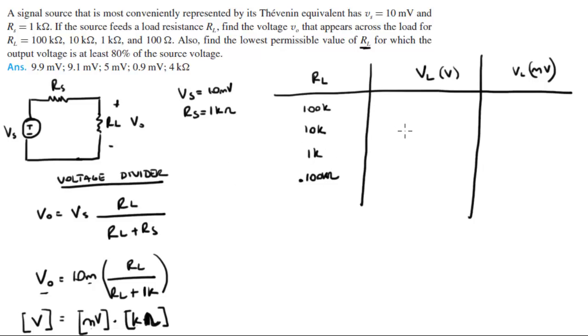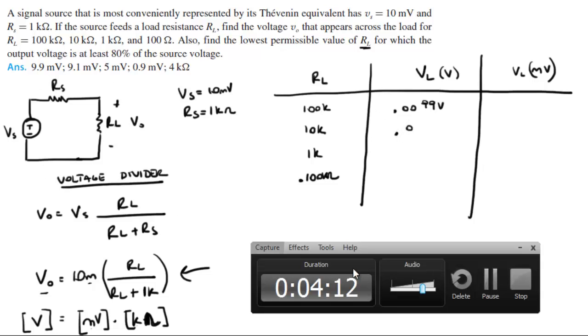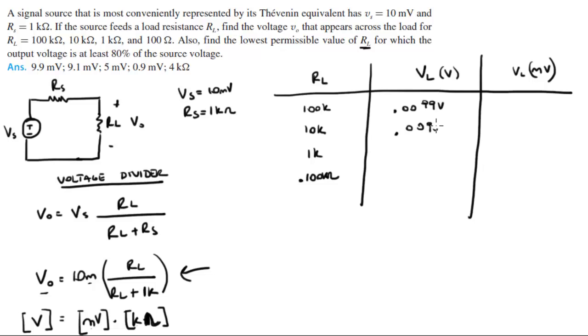So when you plug in these different values you're going to get the following values. For 100K when you plug it into this formula, we're plugging all these values into this formula, gives you 0.0099 volts. Plug it into your calculator and try to follow me. When you plug in 10K into the formula you're going to get 0.00909 volts. If you plug in the 1K you should get 0.005 volts.